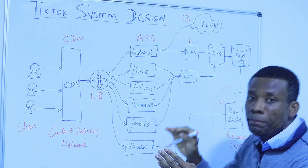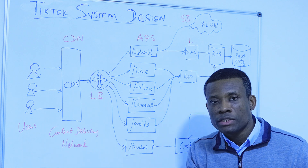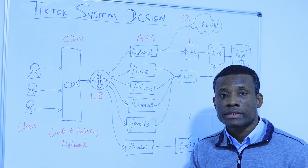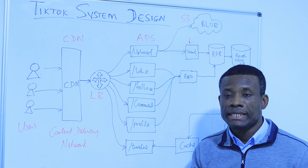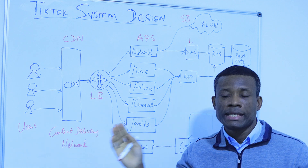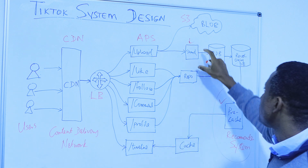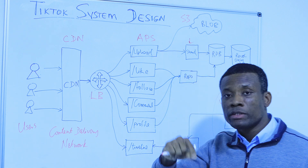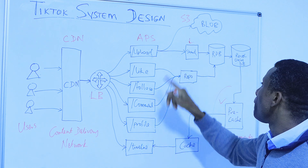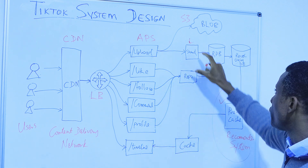Sharding is basically partitioning your database into horizontal partitions, maybe based on regions, based on the structure of the data, or based on certain criteria. You partition your database and group them into different partitions. This is what we call sharding, and it's a very good performance improvement technology.